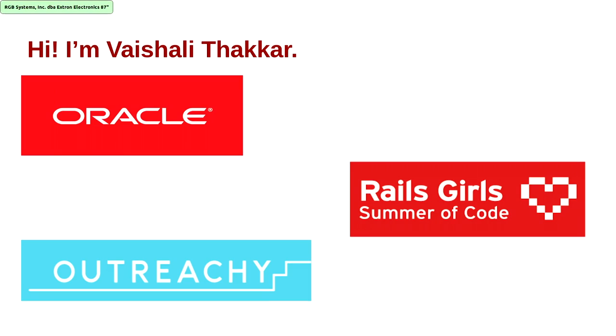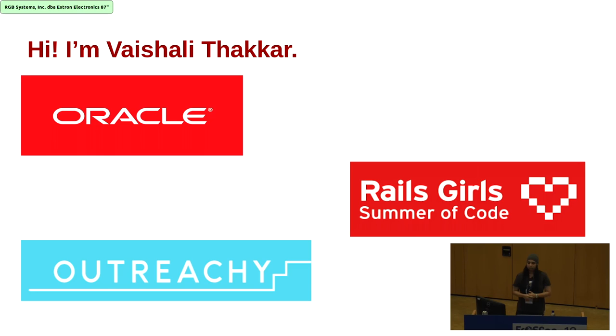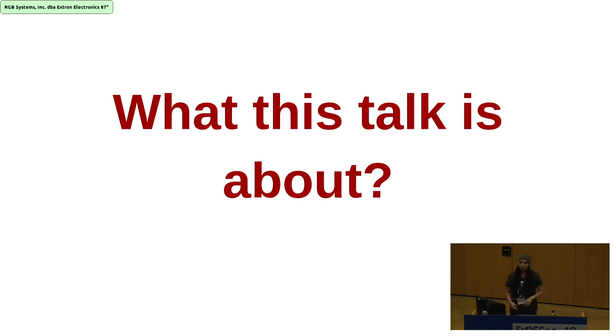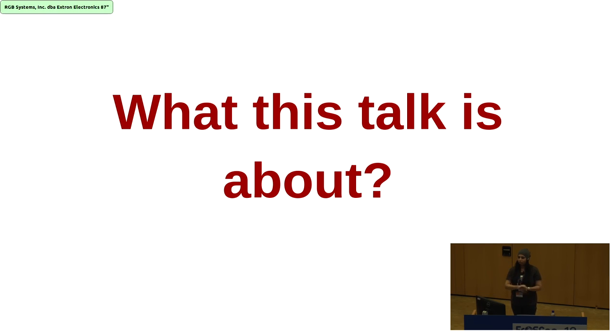I am Vaishali Thakka and I work as a Linux kernel engineer at Oracle in the kernel security engineering group. I'm also associated with Rails Girls Summer of Code as a co-organizer and was a former intern of Outreach, so if you have any questions about that program you can meet me in the hallway afterwards. The basic idea behind this talk is to give an overview of how Linux kernel security has changed over time, from the Unix DAC security model to where we are now, and what the future challenges are and how we can address them.